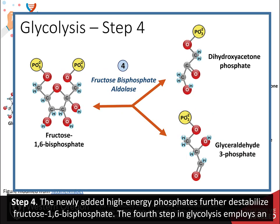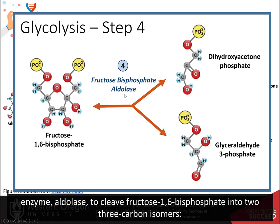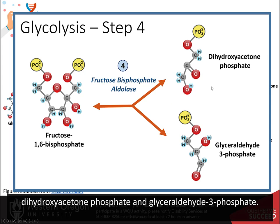Step four. The newly added high-energy phosphates further destabilize fructose 1,6-bisphosphate. The fourth step in glycolysis employs an enzyme, aldolase, to cleave fructose 1,6-bisphosphate into two 3-carbon isomers: dihydroxyacetone phosphate and glyceraldehyde-3-phosphate.